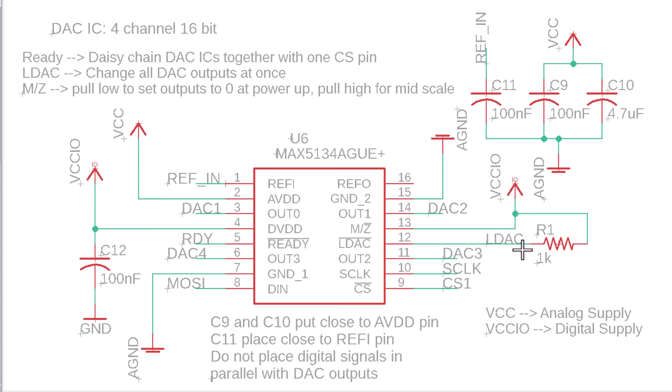We also have the LDAC pin. The LDAC pin is there so you can signal — using an active low — for all outputs to update their values simultaneously. Over SPI you can communicate different values to the channels, and before updating those channels you can do it simultaneously through SPI or use this pin to do it simultaneously through hardware. The last pin is the M/Z pin, which determines how the outputs behave when you first power up the chip. Tied to ground, outputs will be low on power-up; tied to VCC, all outputs will be at mid-level, which is how I have it configured.